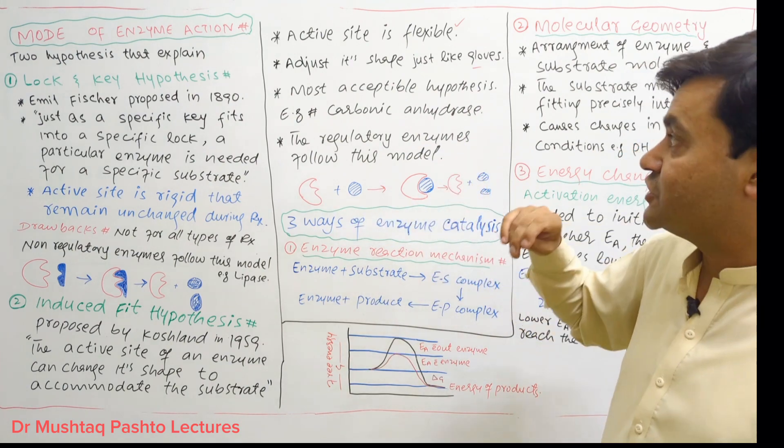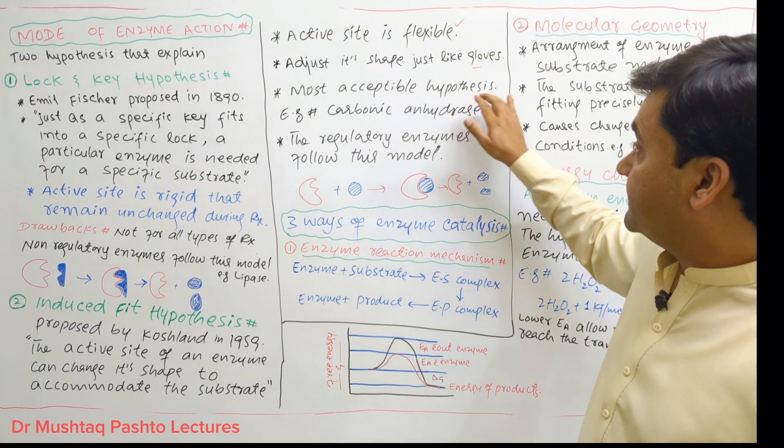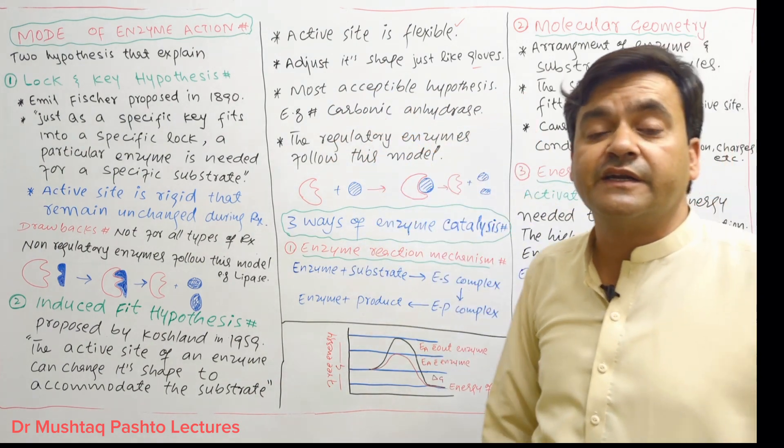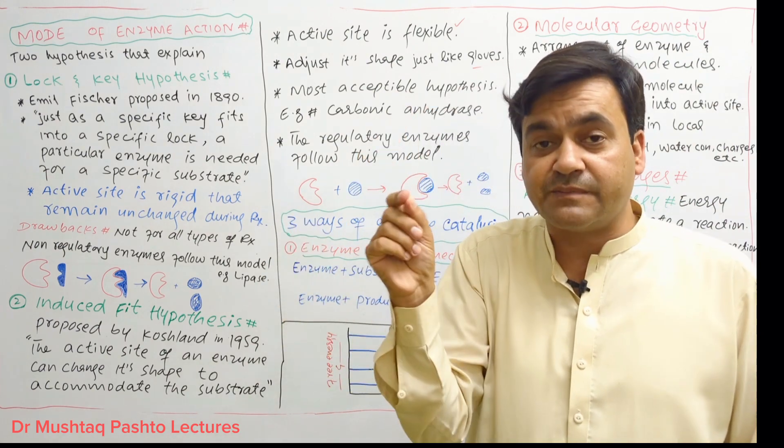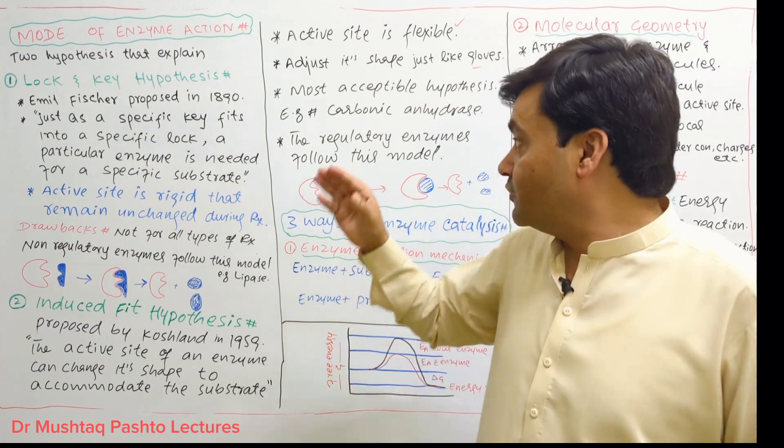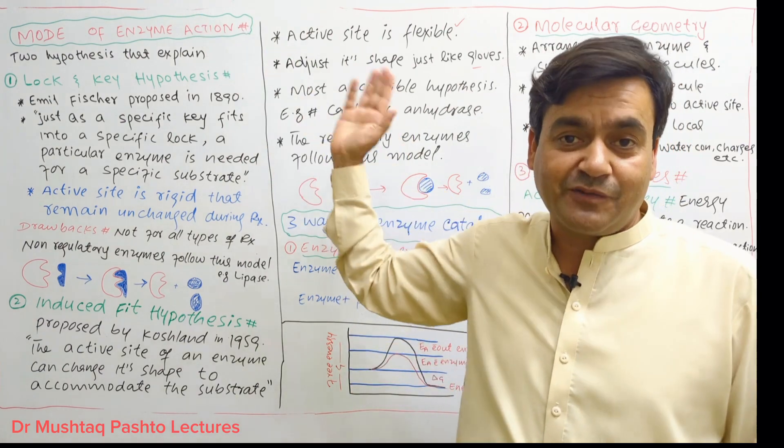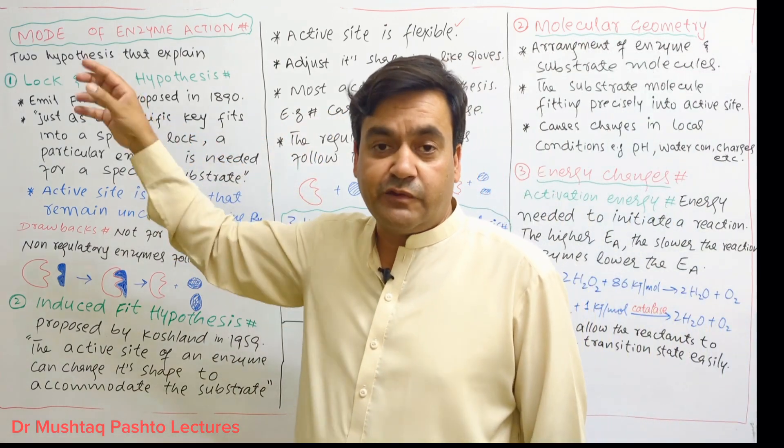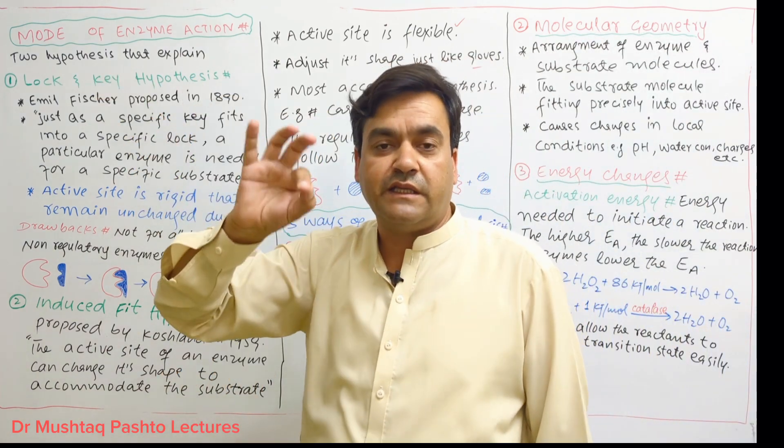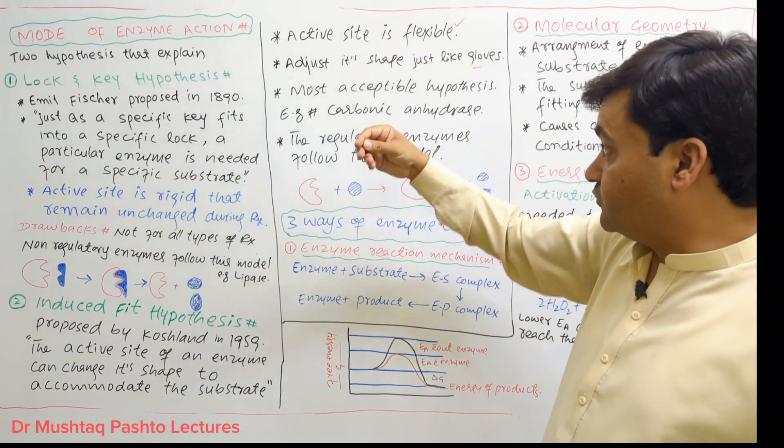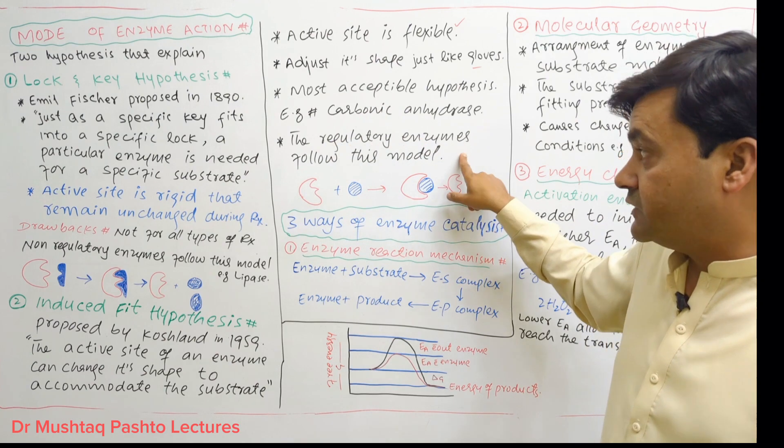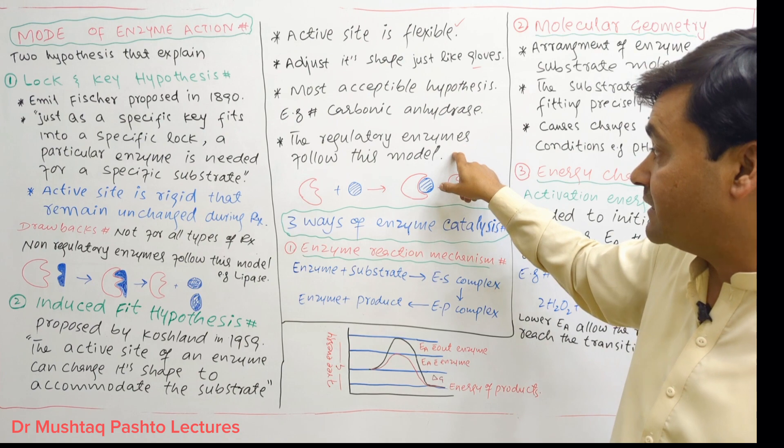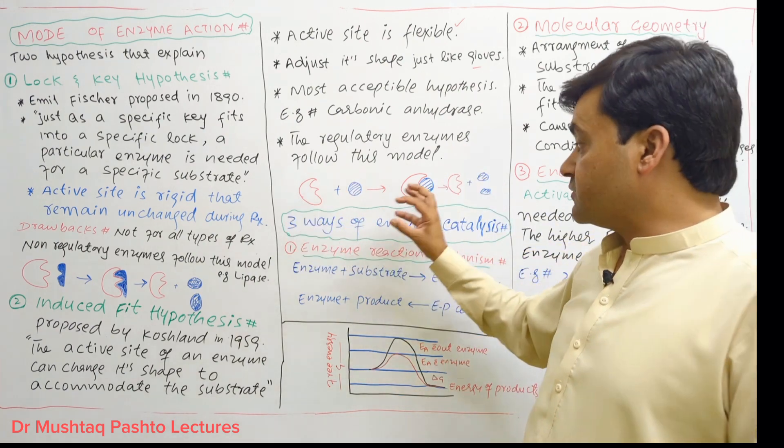This is the most acceptable hypothesis. For example, carbonic anhydrase enzyme is present in blood. It carries oxygen with hemoglobin and this enzyme helps with carbon dioxide. This enzyme can change for different reactions, not just for one reaction or one substrate. Regulatory enzymes follow this model, like allosteric enzymes which have modulators or cofactors.